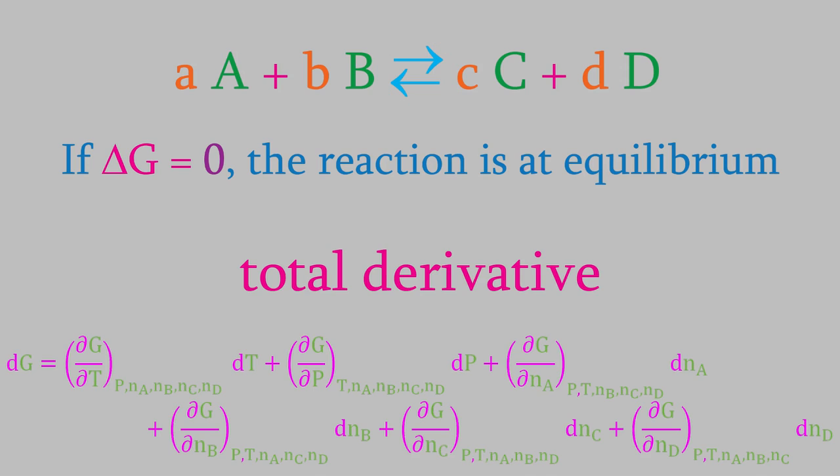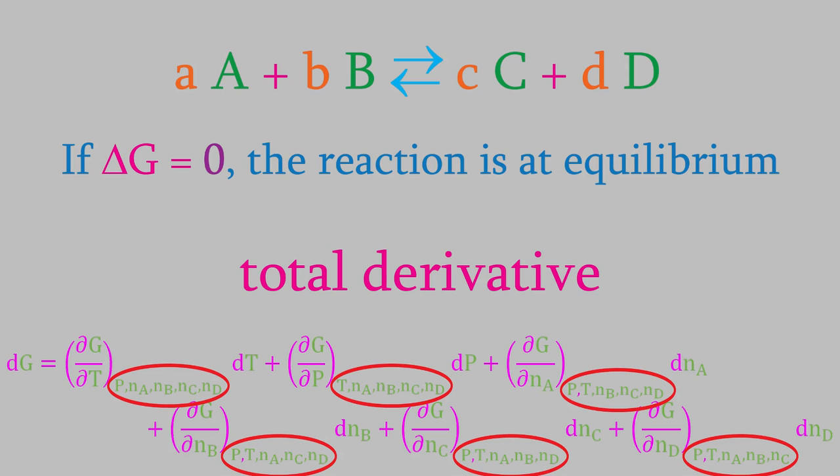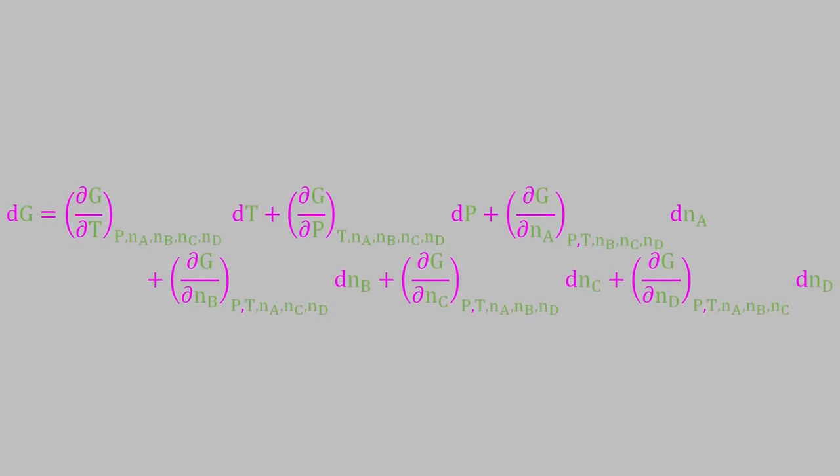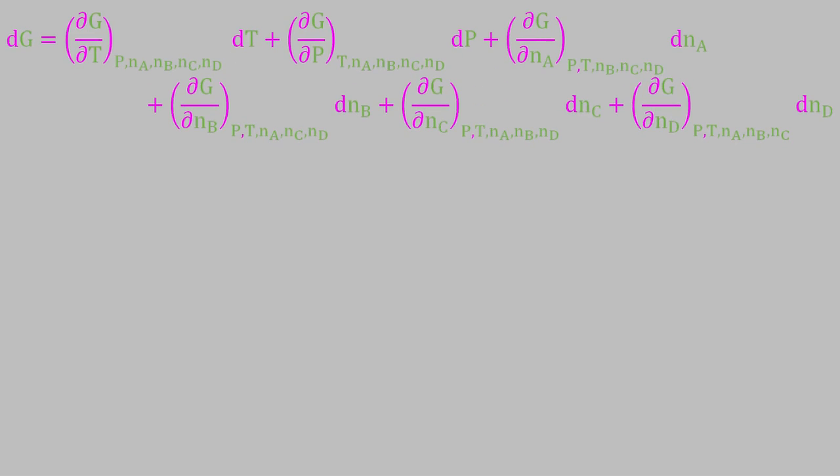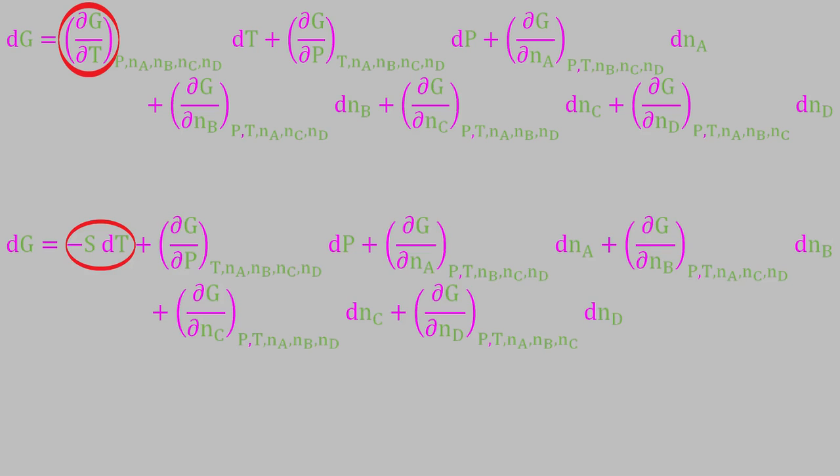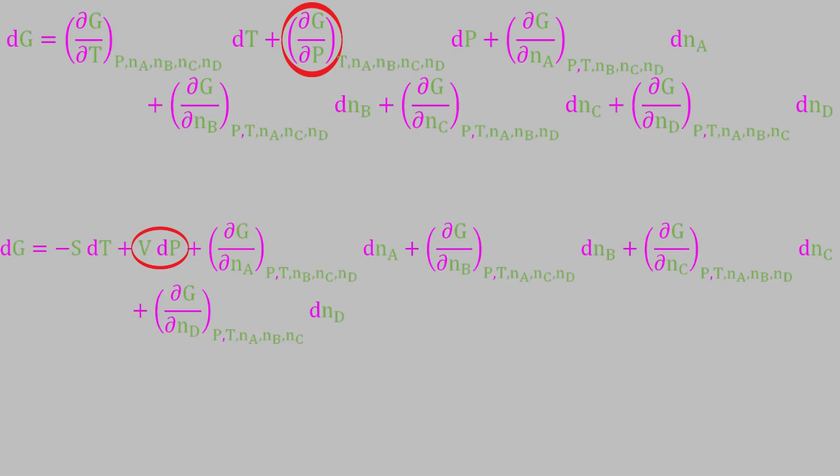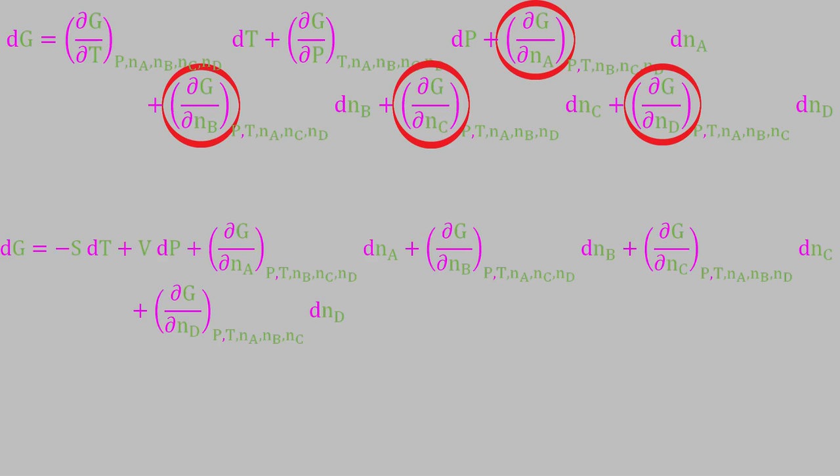That gives us this as the total derivative. Notice that since there are six parameters total, each of the partial derivatives has five different parameters that are being held constant. This looks like an inconveniently large equation, but actually, it turns out that we've learned that each one of those partial derivatives is equal to another property. The partial of G with respect to T is equal to the negative of the entropy. The partial with respect to P is equal to the volume. And each of the other partial derivatives is equal to the chemical potential of either A, B, C, or D.